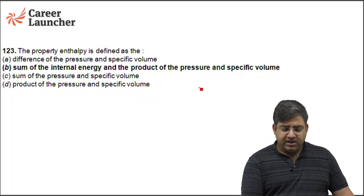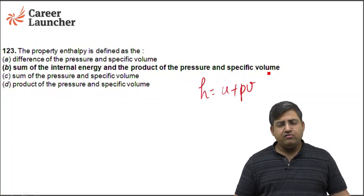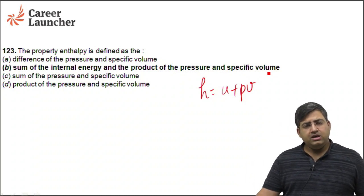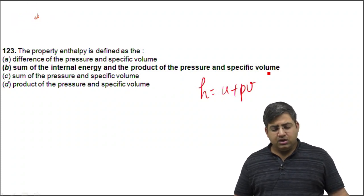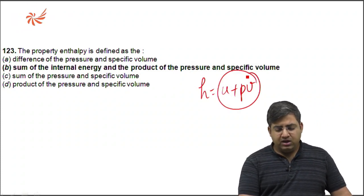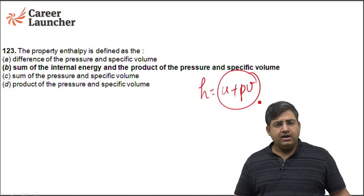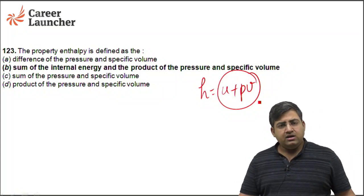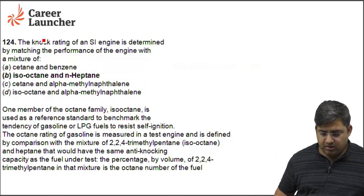The property enthalpy is given by H = U + PV. It is the addition of internal energy (U) and the product of pressure and volume (PV), which is called flow work. The addition of U and PV gives a property called enthalpy. The right answer is B.